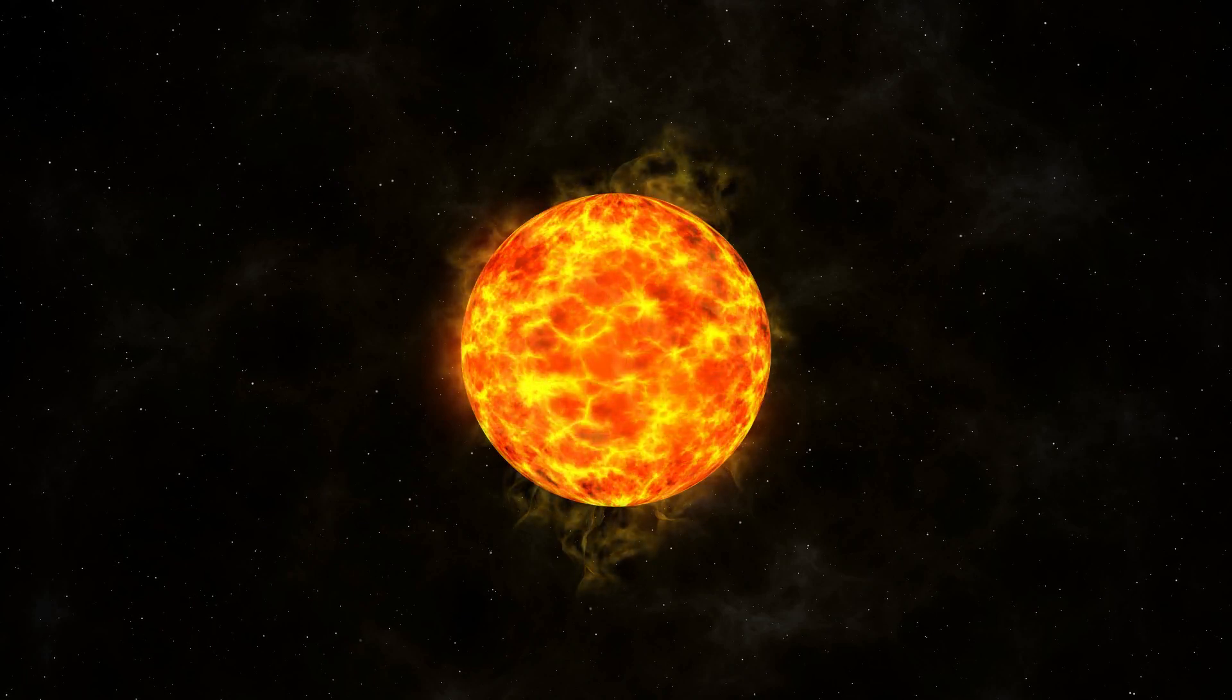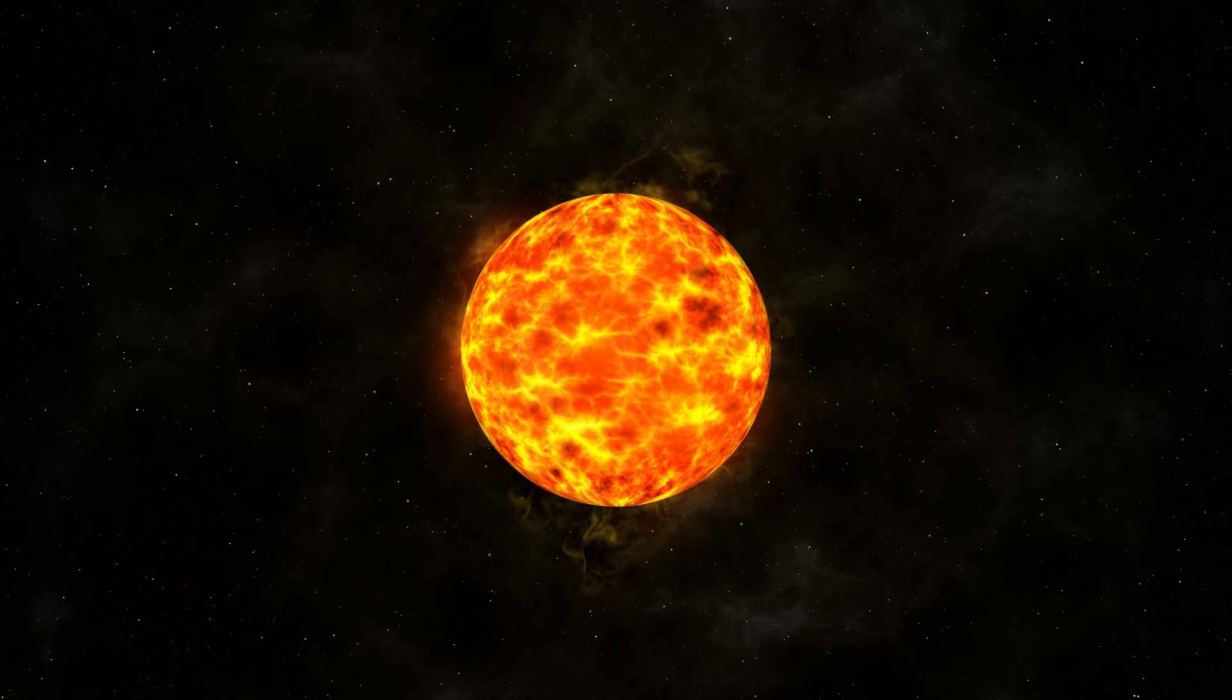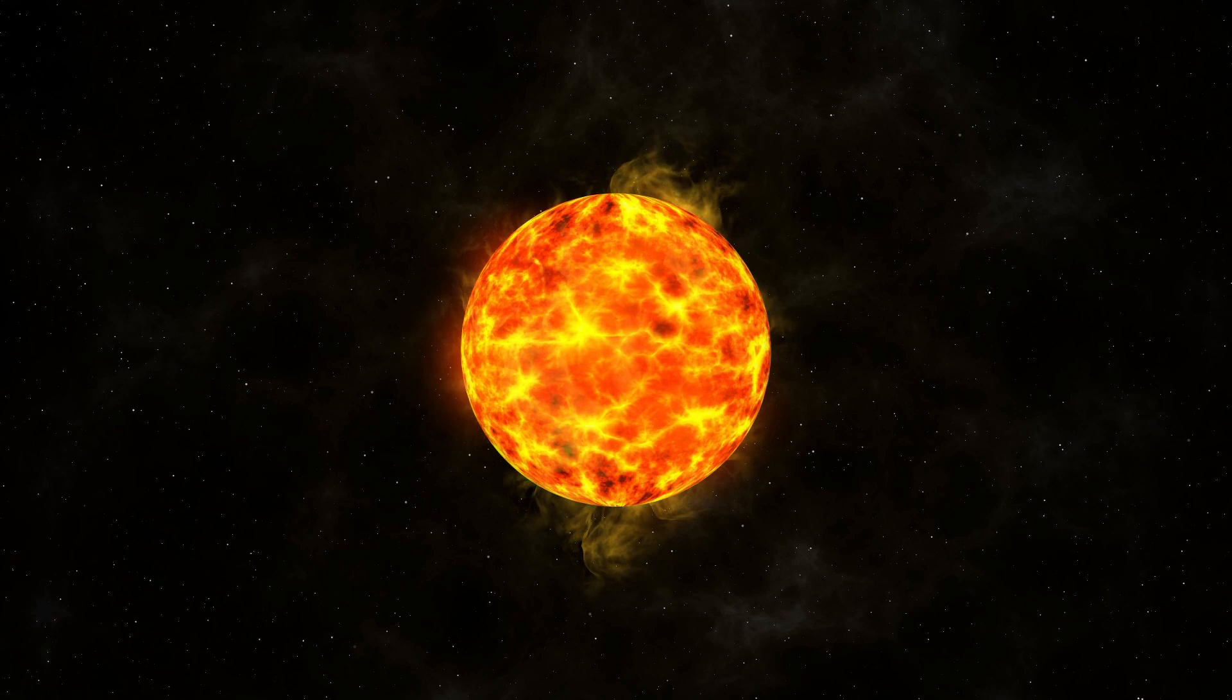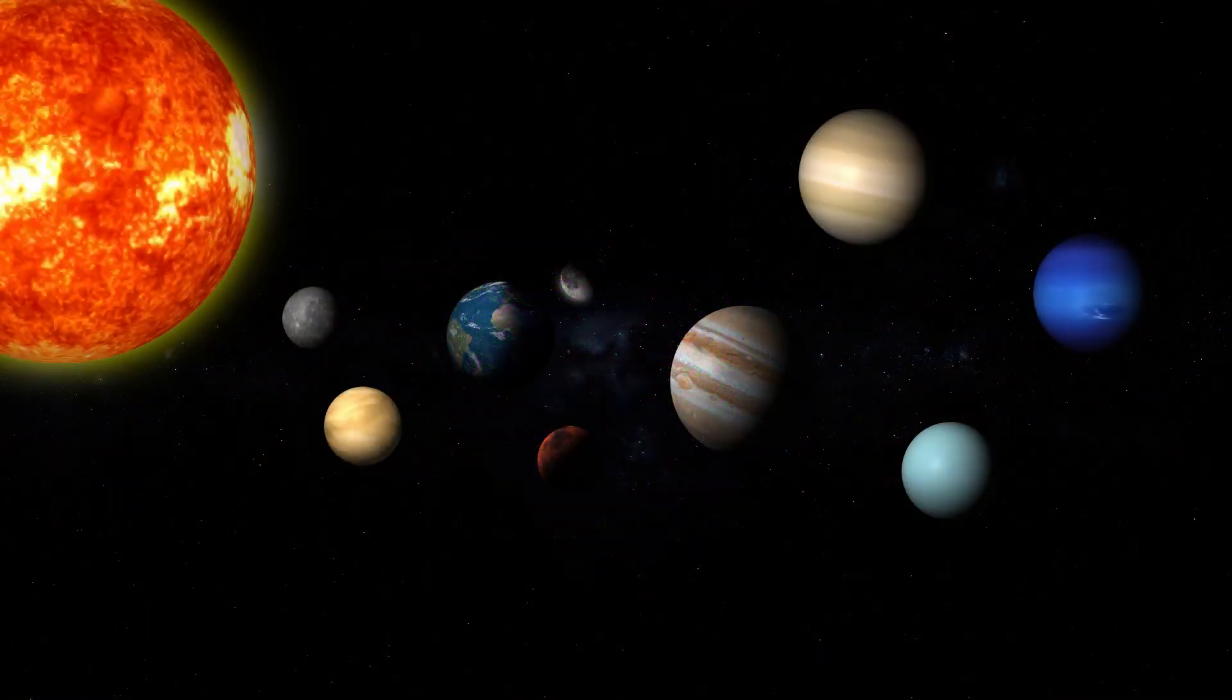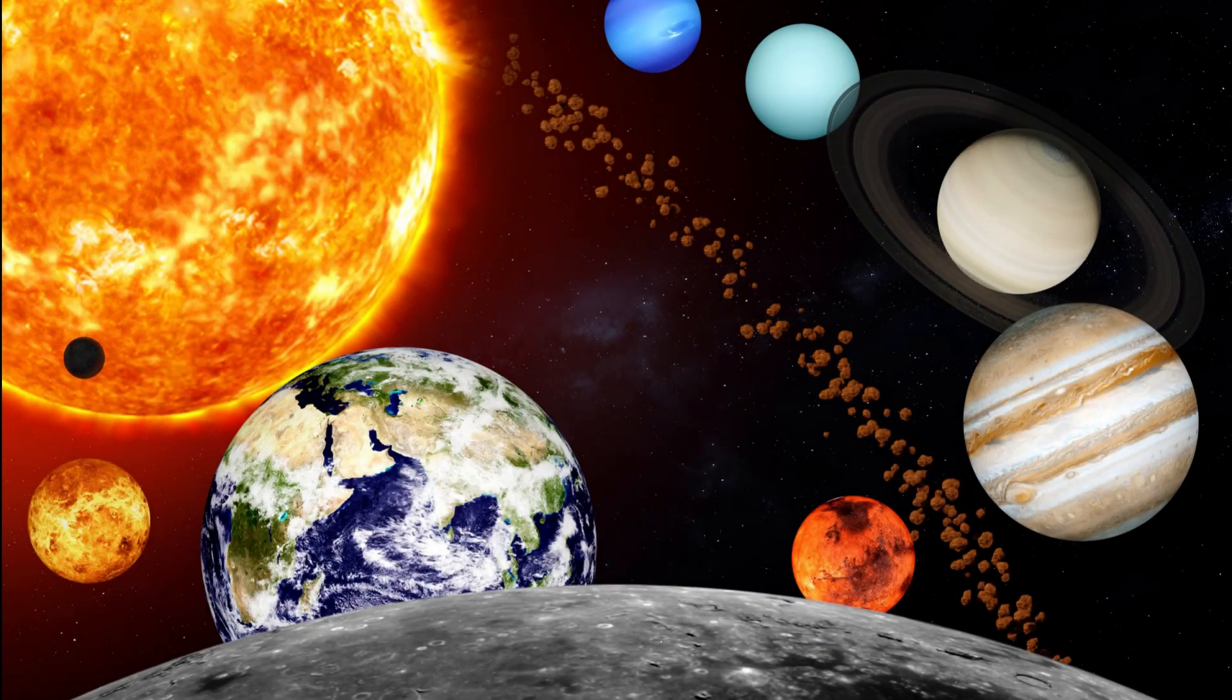Our sun is a star and it contains 99.86% of the mass in the solar system. The solar system is about 4.6 billion years old and it formed from a giant cloud of gas and dust called a solar nebula.